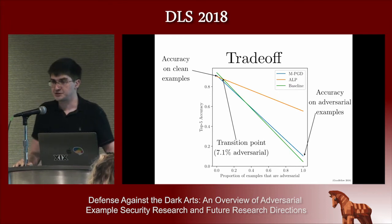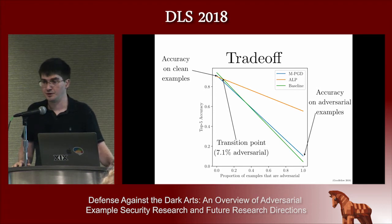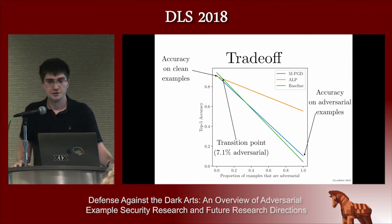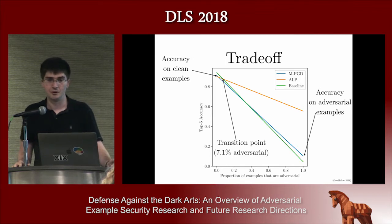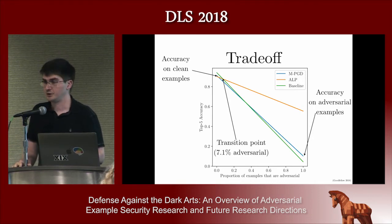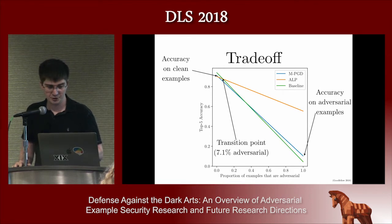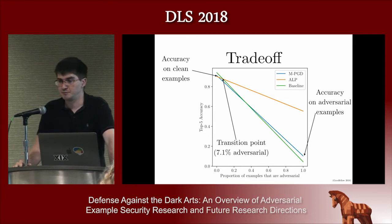When we look at the performance of a defense, it's important to think clearly about our goals. A lot of the time we see models that increase the error rate on the clean test set while decreasing the error rate on the adversarial test set. The trade-off is not necessarily fundamental — there are cases where adversarially trained models perform better on the clean test set than the original undefended model. But in most recent literature, trying to give strong robustness to adversarial examples usually costs a little accuracy on the clean test set.